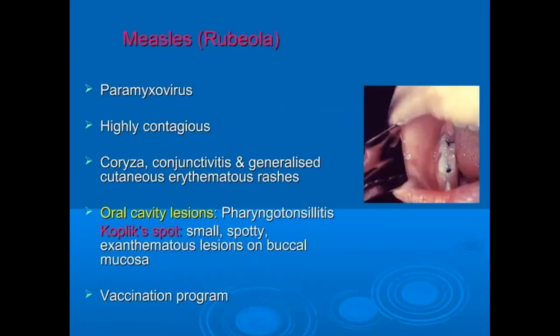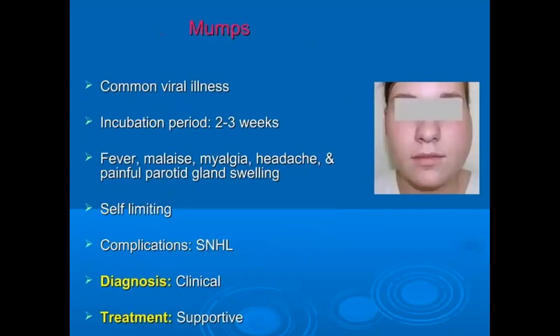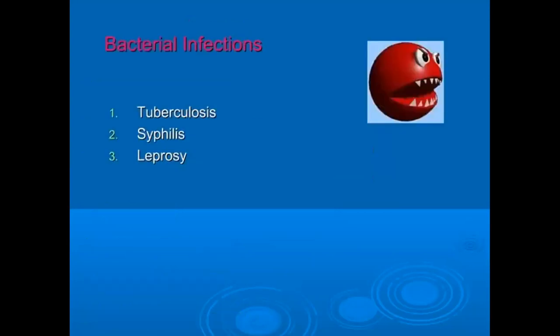Measles is another oral manifestation that can be seen in both adults and children, and a vaccination program should be carried out. Mumps is a common viral illness with an incubation period of two to three weeks. Symptoms include fever, headache, and painful parotid gland swelling. It is self-limiting and diagnosis is clinical; treatment is supportive, though complications can arise.